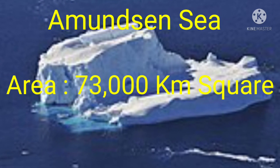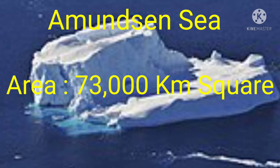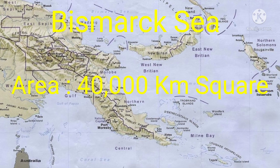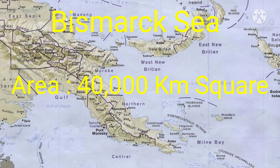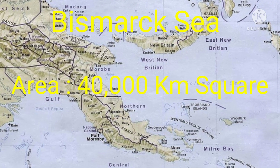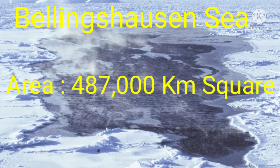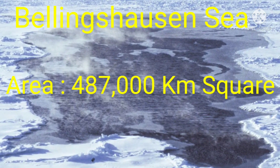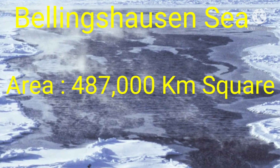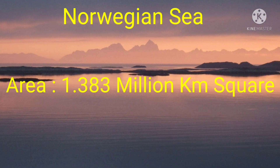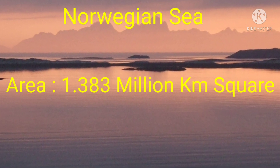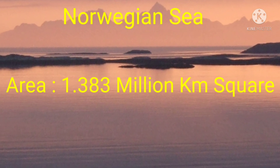Aemanshan Sea — the area of the Aemanshan Sea is 73,000 km². Bismarck Sea — the area of the Bismarck Sea is 4,000,000 km². Bellingshausen Sea — the area of the Bellingshausen Sea is 487,000 km². Norwegian Sea — the area of the Norwegian Sea is 1,383,000 km².